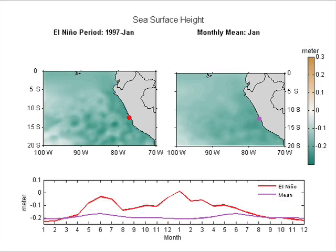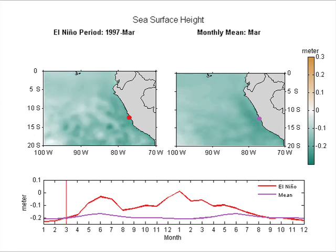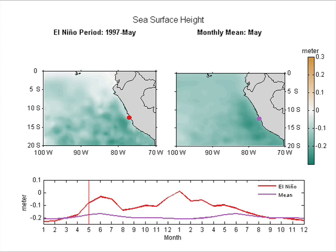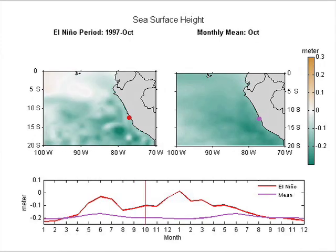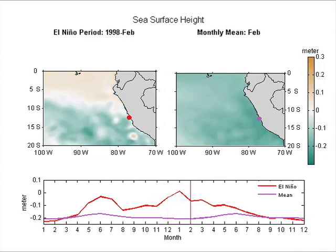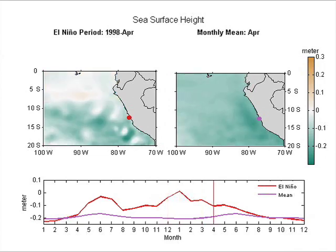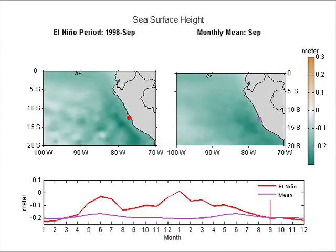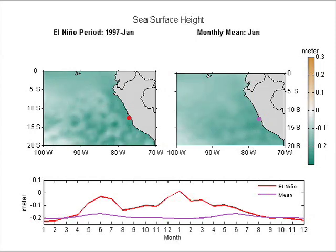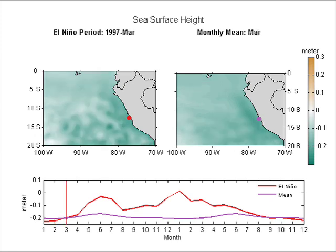The next figure shows monthly sea surface height off the Peruvian coast. Brown is high sea surface height and green is low sea surface height. The left map shows sea surface height during an El Niño period, and the right map shows the average surface height during a non-El Niño period. The bottom panel describes monthly sea surface height offshore of Lima. You can see that water flows from the equator to the Peruvian coast and increases sea surface height.